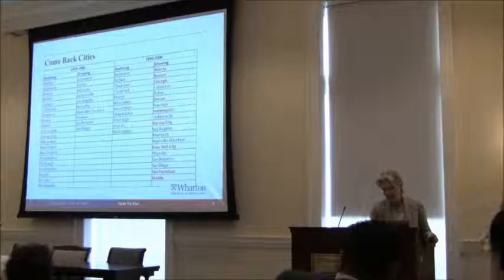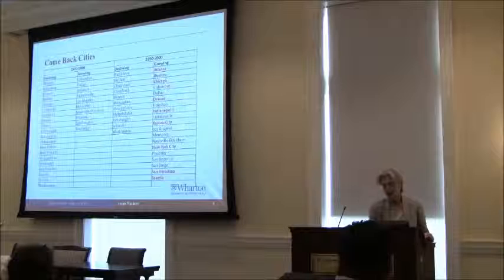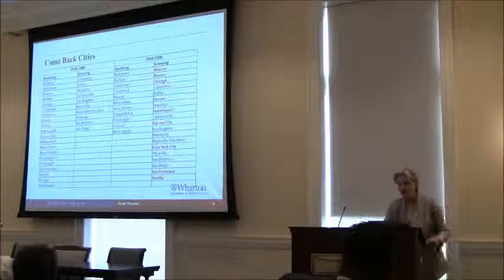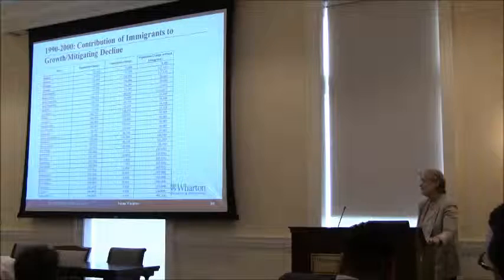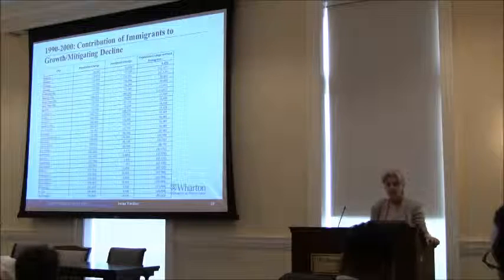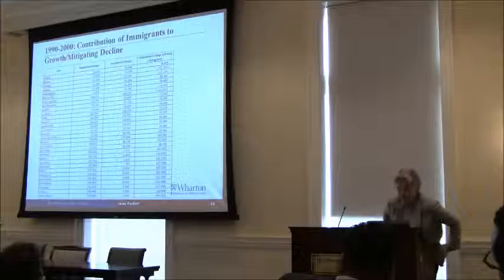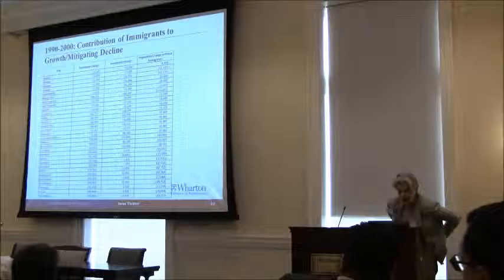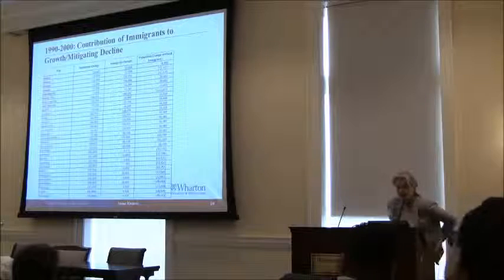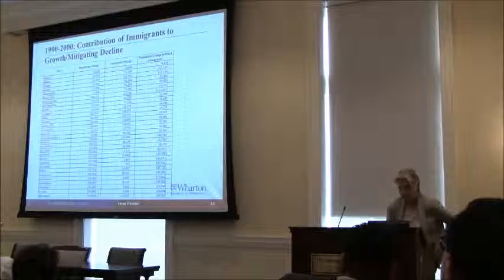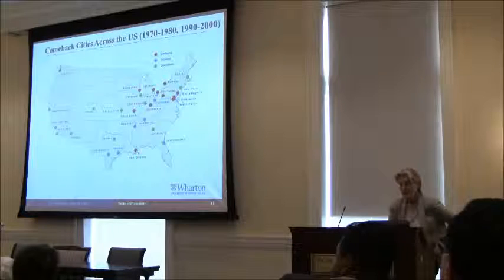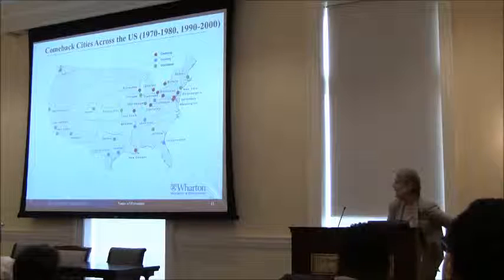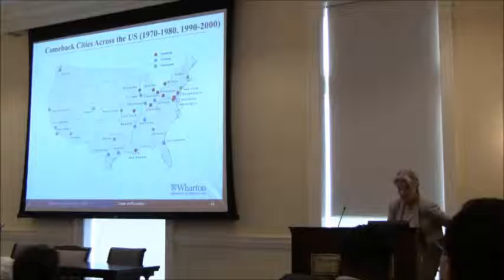Cities like San Antonio, Phoenix, and Los Angeles have been growing throughout the period we have data for. But these are the reversals, and the numbers of the total contribution are dramatic. The decline in Boston but for immigrants would have been 22,000; Chicago, 47,000; New York, 100,000 — as of 2010. These comeback cities are in green throughout the country — that is the dispersal.